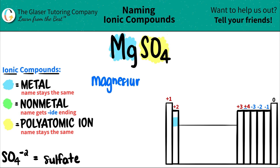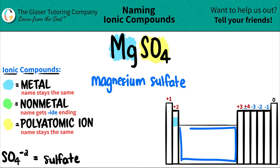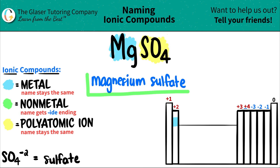Now I have the polyatomic coming up, but polyatomics are also easy to name because those names stay the same. So if it was sulfate, it's going to stay sulfate. Since this is an ionic compound, I just have to make sure — do I need a Roman numeral? But magnesium is not part of the transition metals; it's not in that block. So I don't need a Roman numeral. MgSO4 is magnesium sulfate.